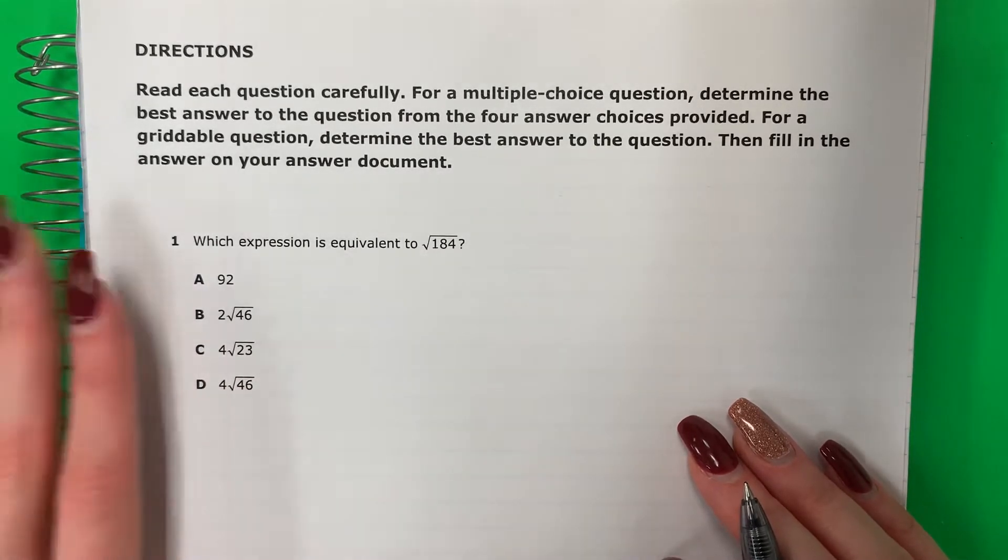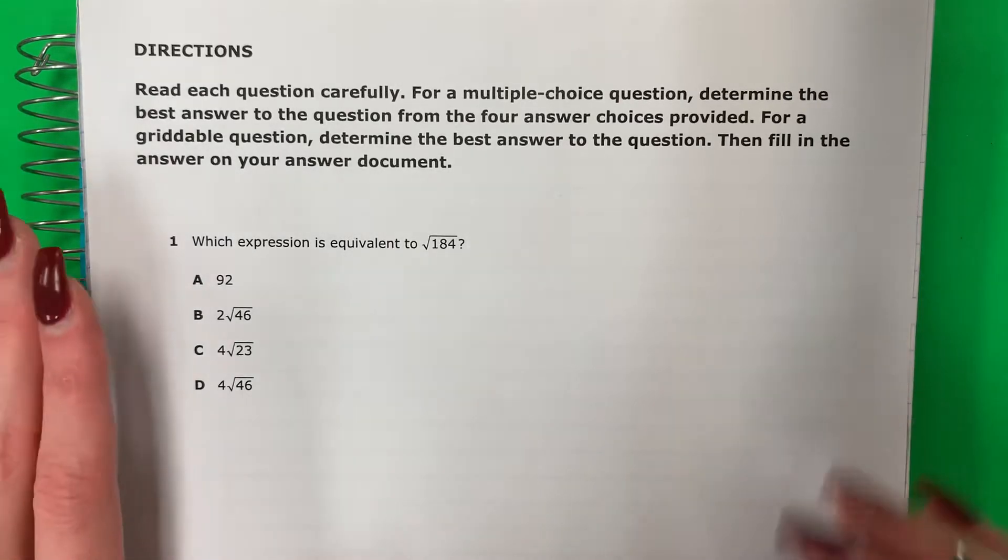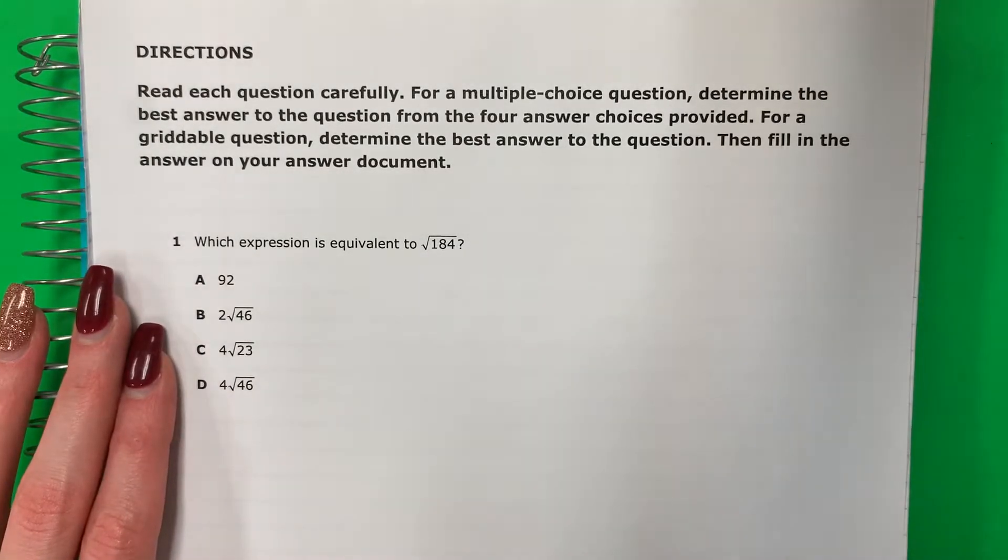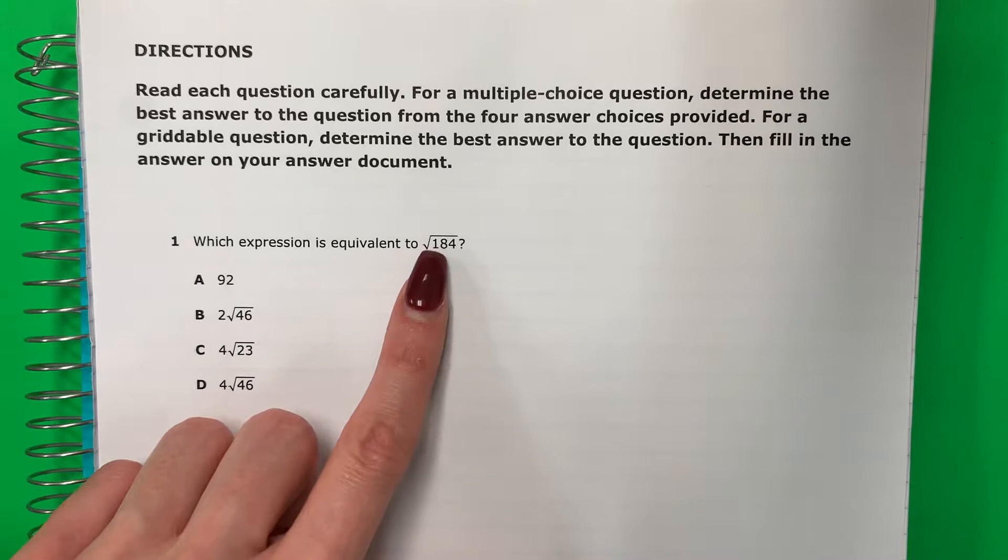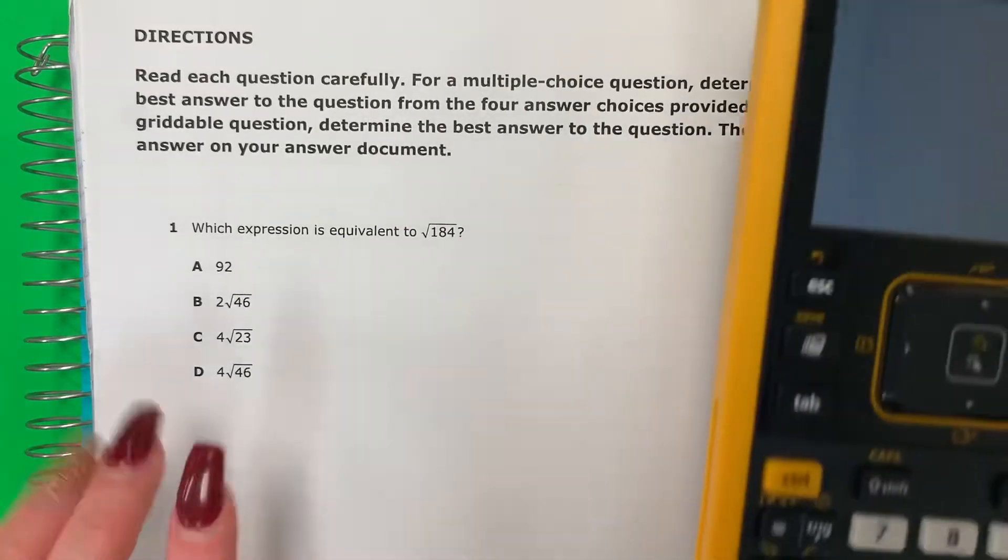I'm going to show you with the calculator first. Voy a mostrarles con la calculadora primera. Okay, so the first thing I'm going to do is put this in the calculator. La primera cosa es voy a poner esta en la calculadora. Okay, so square root 184.